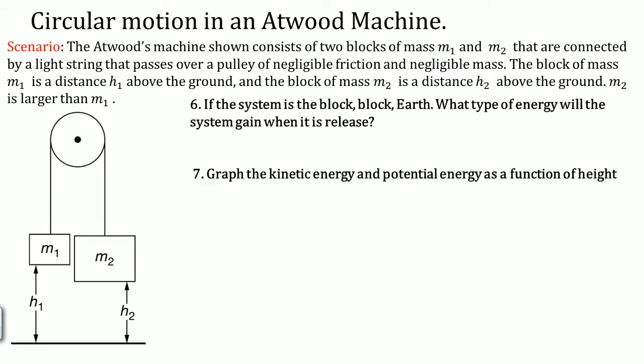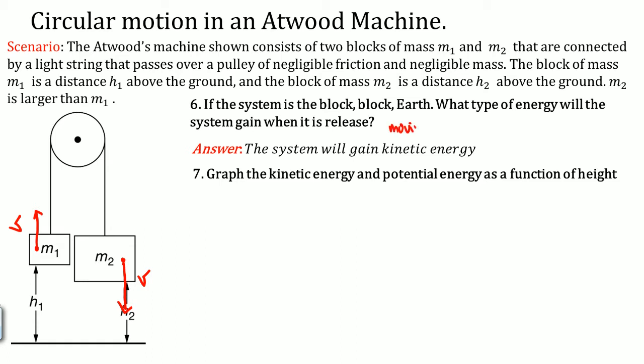If the system of the block is block-block-Earth, what type of energy would the system gain when it is released? The system will gain kinetic energy. M2 is going to move down and M1 is going to move up, both with a velocity. Anytime anything moves it has kinetic energy because there is a velocity associated with it — kinetic energy by definition is moving mass.